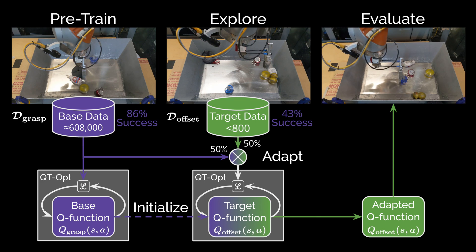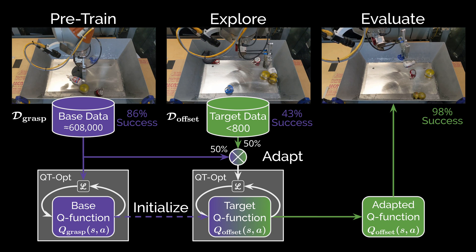We then evaluate the performance of this adapted Q function on the target task variation with no further training. Here, our fine-tuning procedure achieves a 98% success rate using the offset gripper, a 55% improvement over the base Q function.